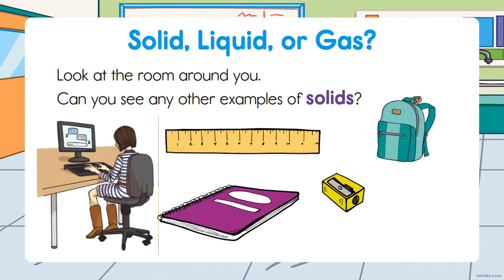Now look around your room. Can you see any examples of solids? Yes. In the classroom you will see your computer, a desk, a chair, your supplies — a ruler, a book, a sharpener, an eraser, your backpack, and also your pencil.